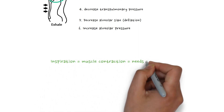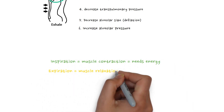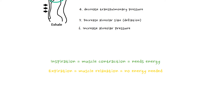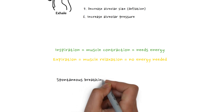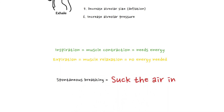Inspiration involves contracting muscles, while expiration involves muscle relaxation. Muscle contraction requires energy, while muscle relaxation is a passive process. So inspiration requires energy, while expiration in healthy individuals is a passive process. That's how spontaneous breathing works — we suck air in and let it out.